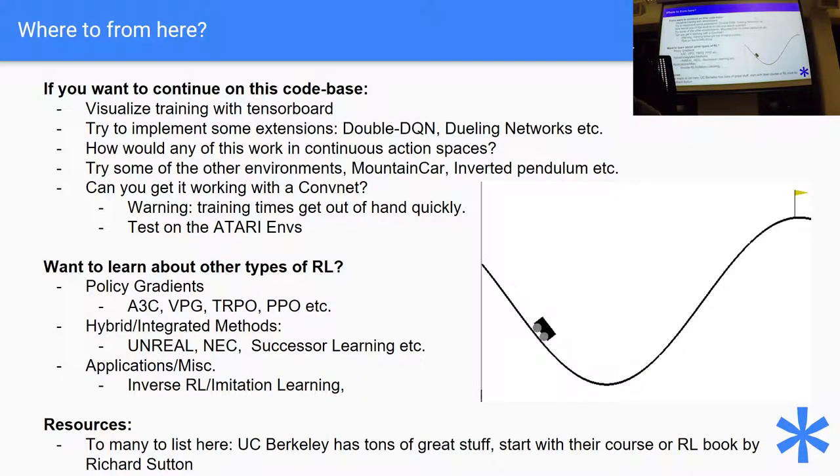And that's it. So those three things make up a deep queue network. If you do that with a ConvNet, you'll be able to train on Atari games, but it will take you days.